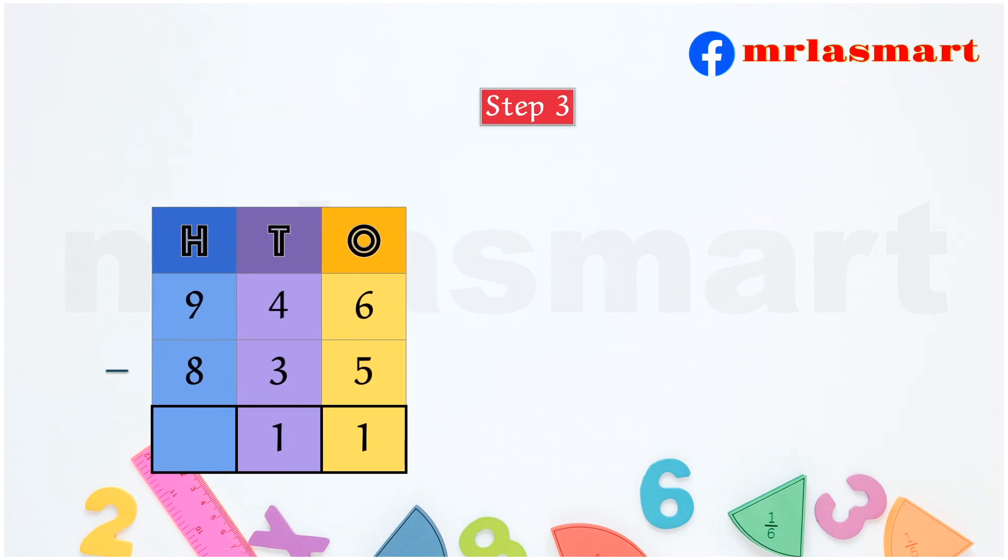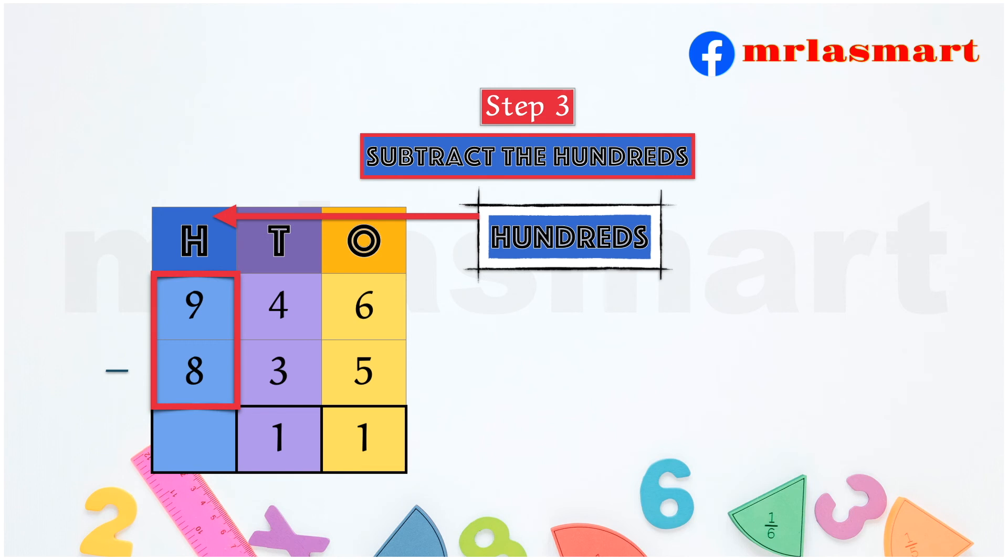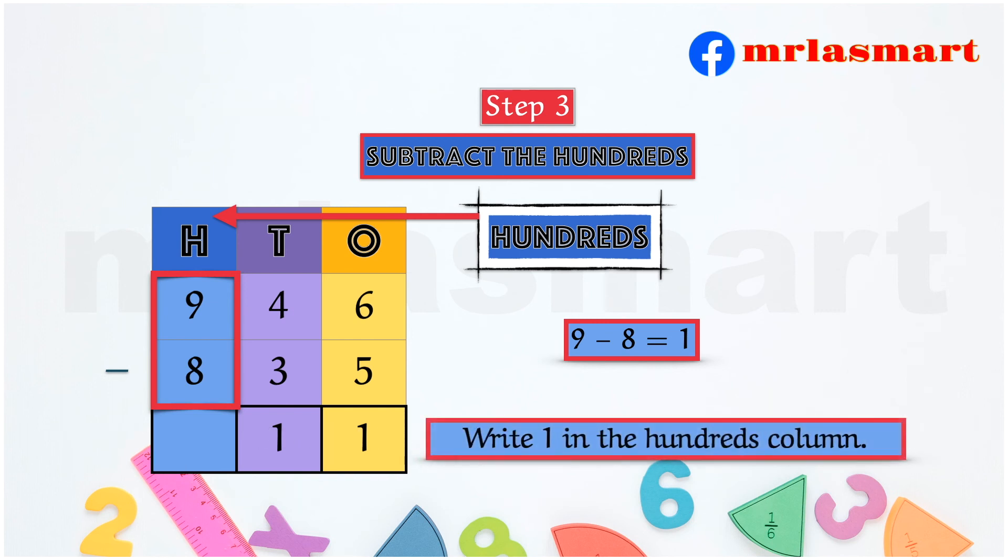Step 3. Subtract the hundreds. 9 minus 8 equals 1. Write 1 in the hundreds column.